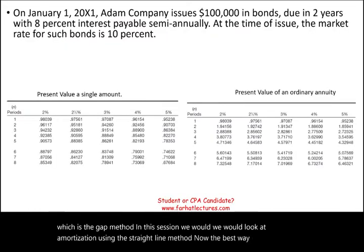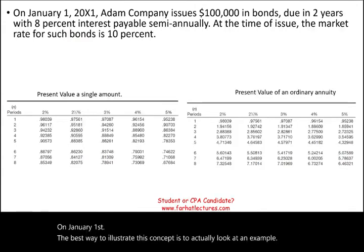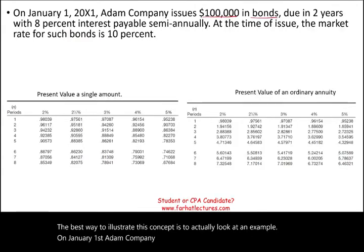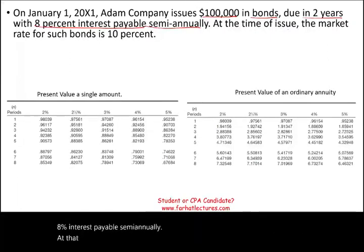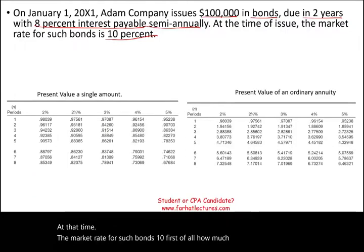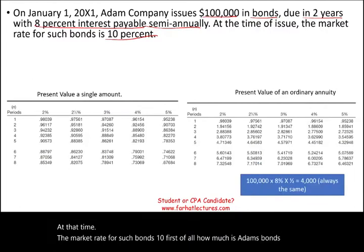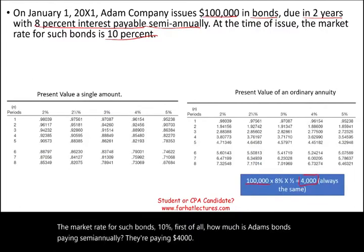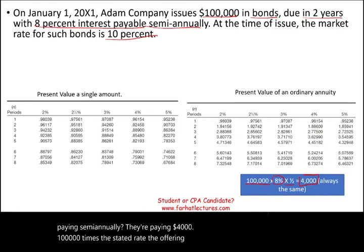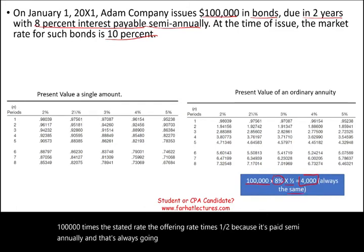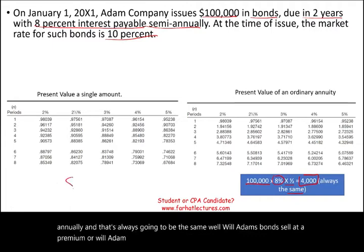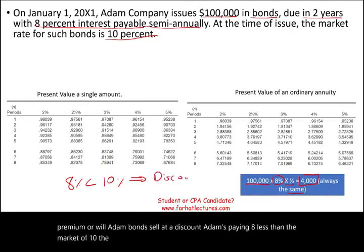The best way to illustrate this concept is to look at an example. On January 1st, Adam Company issues $100,000 in bonds due in two years with 8% interest payable semi-annually. At that time, the market rate for such a bond is 10%. How much is Adam's bond paying semi-annually? They're paying $4,000 — that's $100,000 times the stated rate times one half because it's paid semi-annually. Since Adam is paying 8%, which is less than the market rate of 10%, the bond will sell at a discount.